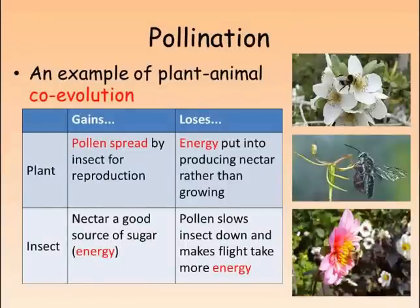Two examples of this are orchids that have evolved to be a similar shape and color to a type of wasp, so that male wasps are attracted to them and try to mate with the flower, picking up pollen in the process. Another example is insects that have found ways of accessing the nectar through the back of the flower, avoiding the pollen altogether.